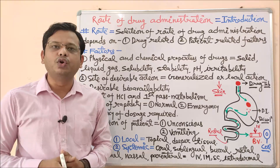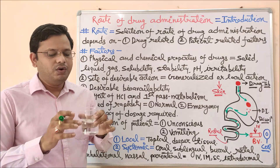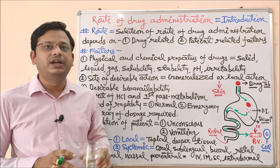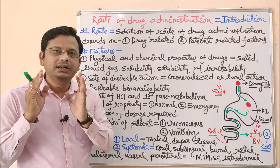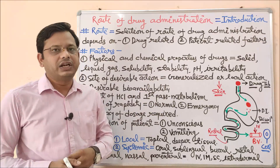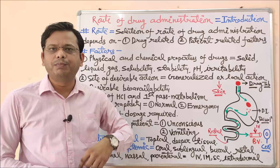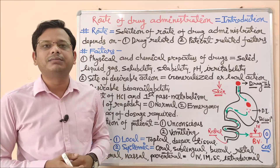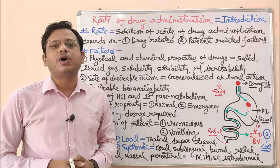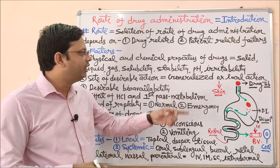Solubility is another key parameter — whether a drug is soluble in water or in oil influences the selection of route. A tablet like Gelusil dissolves in water but not in oil, so solubility determines suitability. Stability is also critical: if a drug is acid-sensitive (acid-labile), it will be destroyed by the hydrochloric acid in the stomach. Such a drug should not be given by oral route but rather by another suitable route such as intravenous or topical.